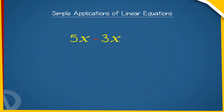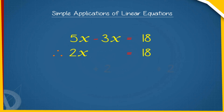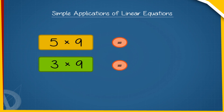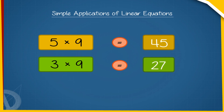According to the question, 5X minus 3X equals 18. Therefore, 2X equals 18. Dividing both sides of this equation by 2, 2X divided by 2 equals 18 divided by 2. Therefore, X equals 9. Hence, the two numbers are 5 into 9 and 3 into 9, that is, 45 and 27.